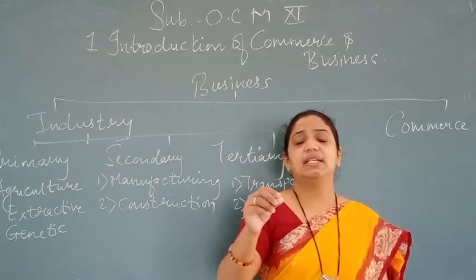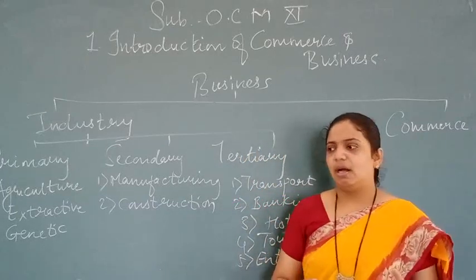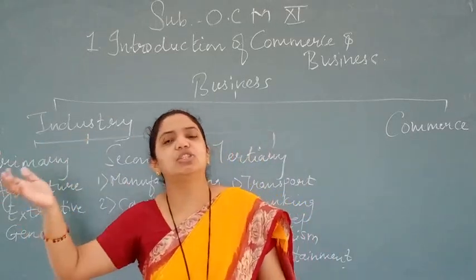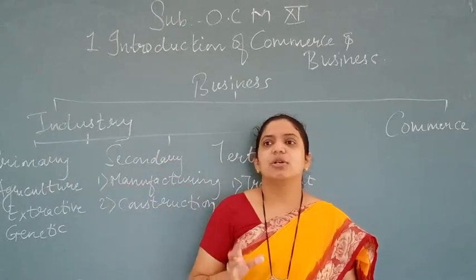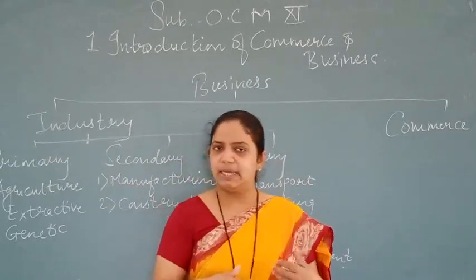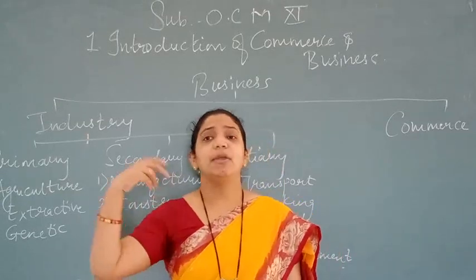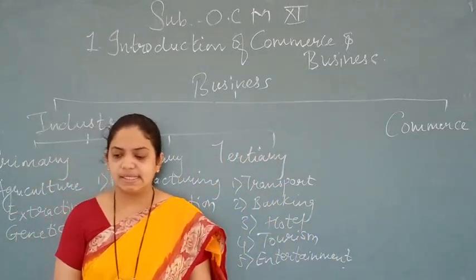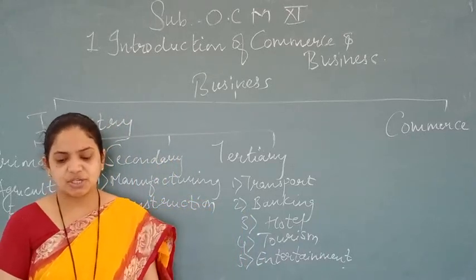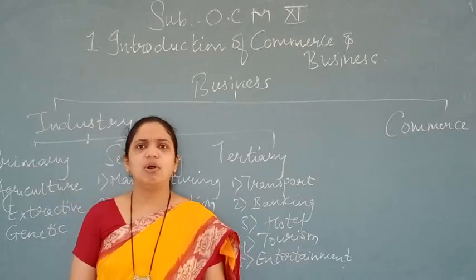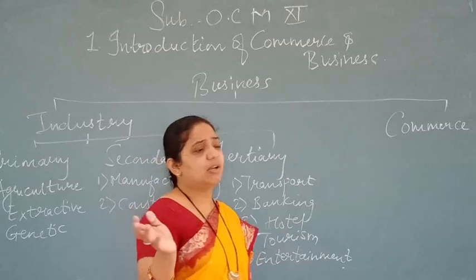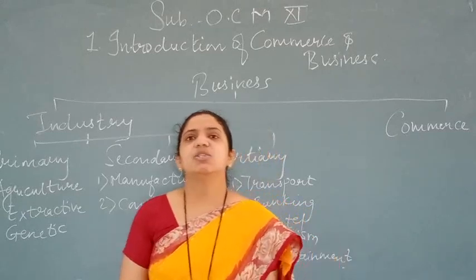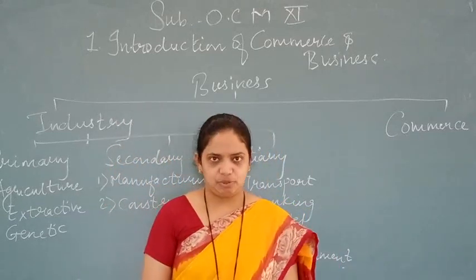For example, take cheese. It is processed from milk. Cheese is needed by many other industries for making other products. Consumer goods are those which can be consumed directly, but capital goods may be processed or used by other industries. The term industry also means a group of firms producing similar or related goods — for example, the sugar industry refers to all manufacturing units producing sugar from sugarcane.